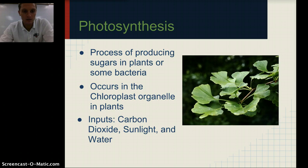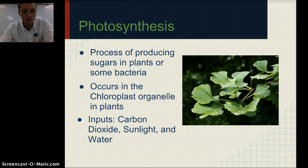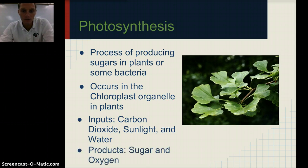The inputs are carbon dioxide — so carbon dioxide is being taken in by the plants — they use sunlight, and they use water. Carbon dioxide and water provide the molecules or atoms necessary to produce the sugar. The sunlight provides the energy, or the spark, that actually drives this whole process. And the products that it puts out are sugar and oxygen.